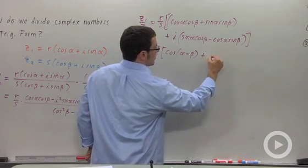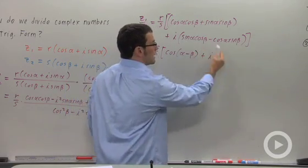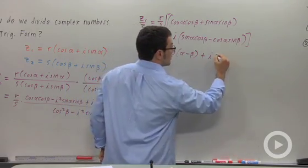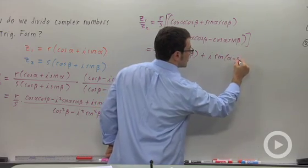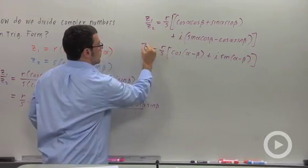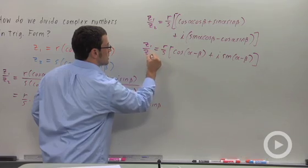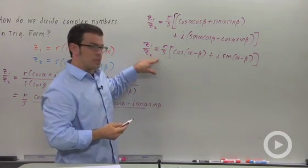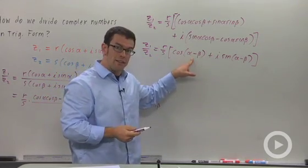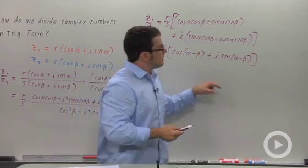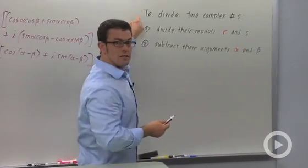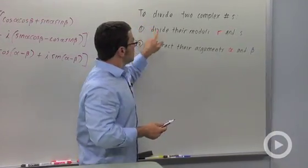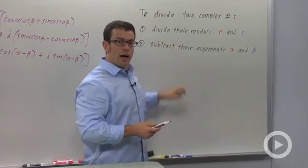And then, plus I times. And this is the sine of alpha minus beta. And what this reveals is, if you want to divide two complex numbers, you divide their moduli and you subtract their arguments. That's the thing to remember. To divide two complex numbers, divide their moduli and subtract their arguments.